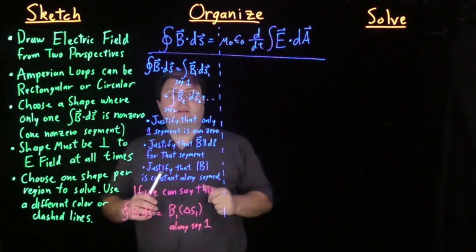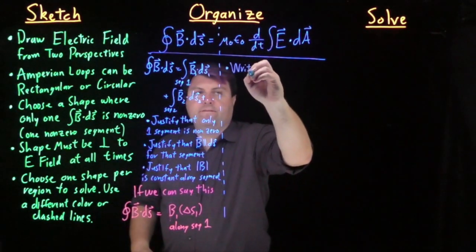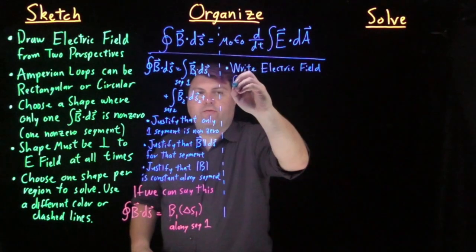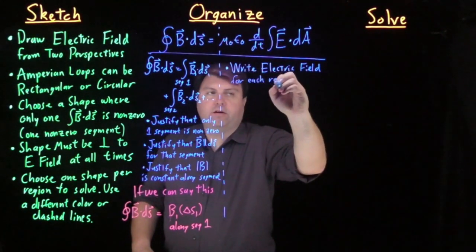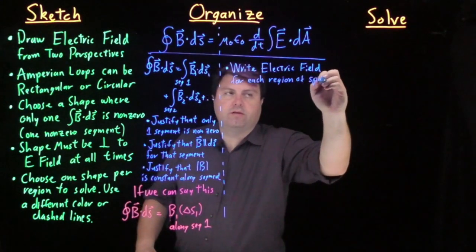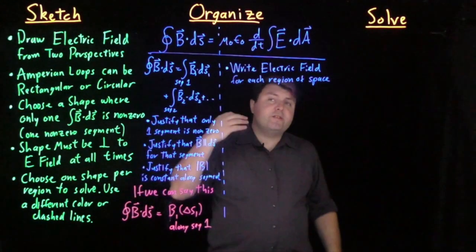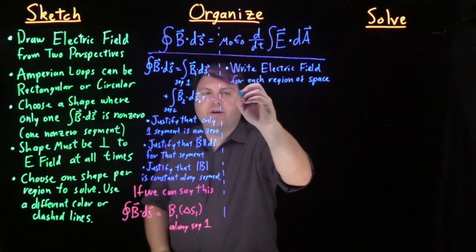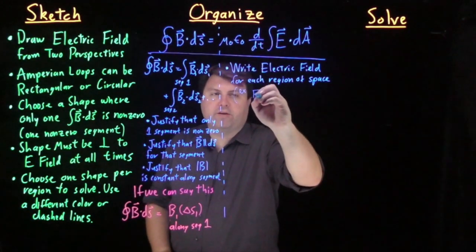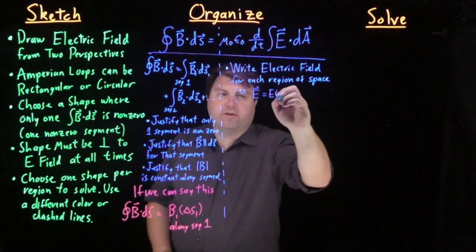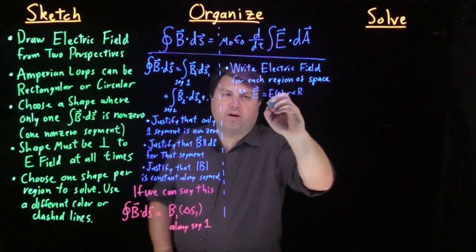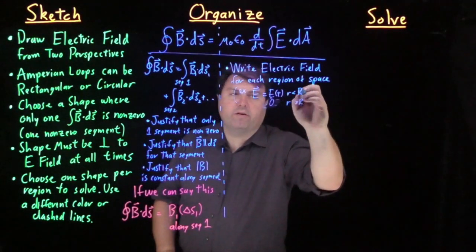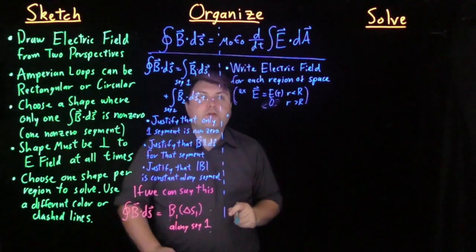So for our electric field over here, we want to first start by writing the electric field for each region of space. So this is very similar to what we've done for the charge densities, very similar we've done for the current densities, very similar to what for the magnetic field for each region of space. So an example might be that we have our electric field is an electric field for time for r less than some r and is equal to zero for some r greater than r.